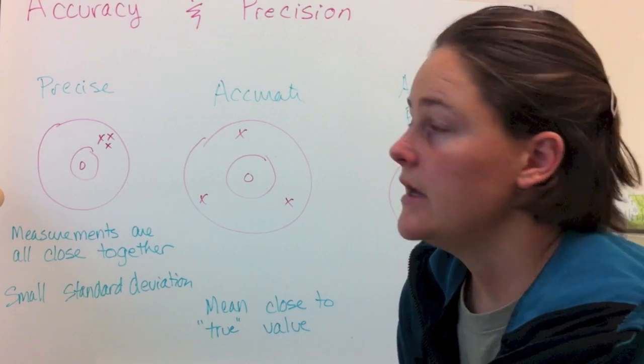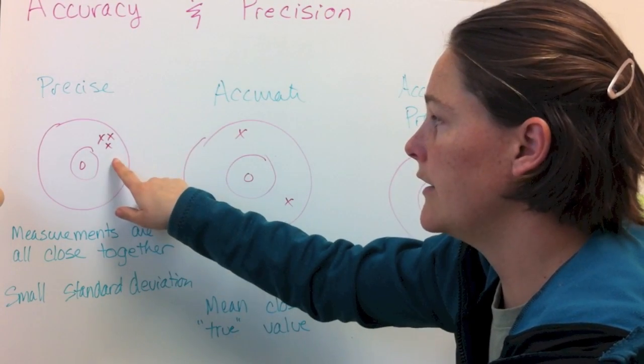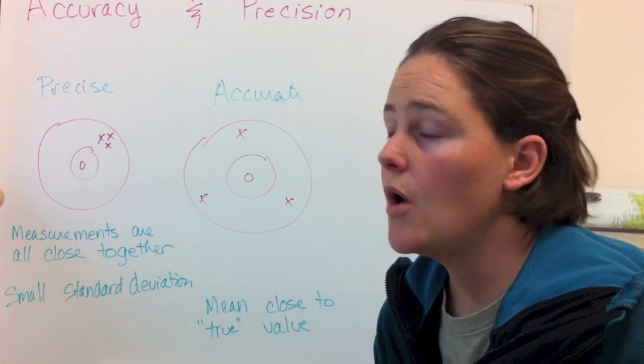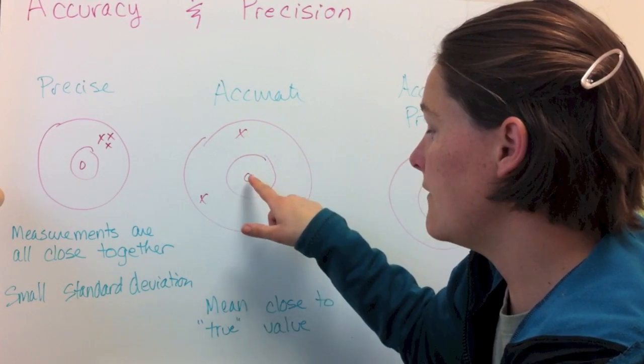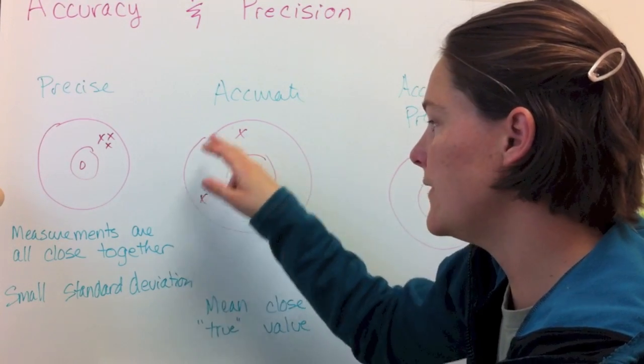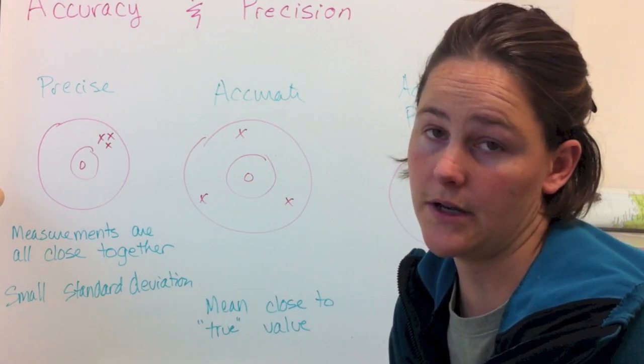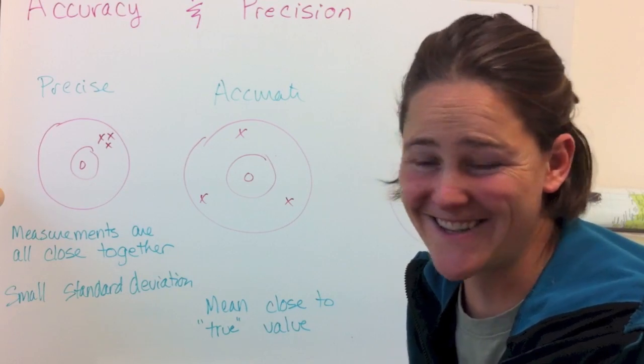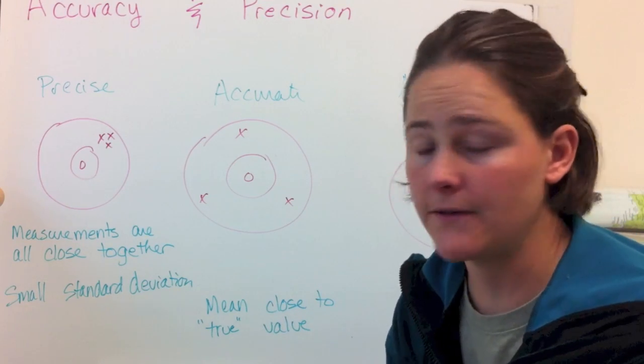The heart of this matter is that you can have precision, where your numbers are all very close together, so that would give you a small standard deviation. And they could be accurate, where the mean is very close to the true value. So, each of these measurements, if you average it, it's very close to the center of the target. But clearly, none of the individual measurements are anywhere near the center of the target. So, accuracy and precision are two different things.